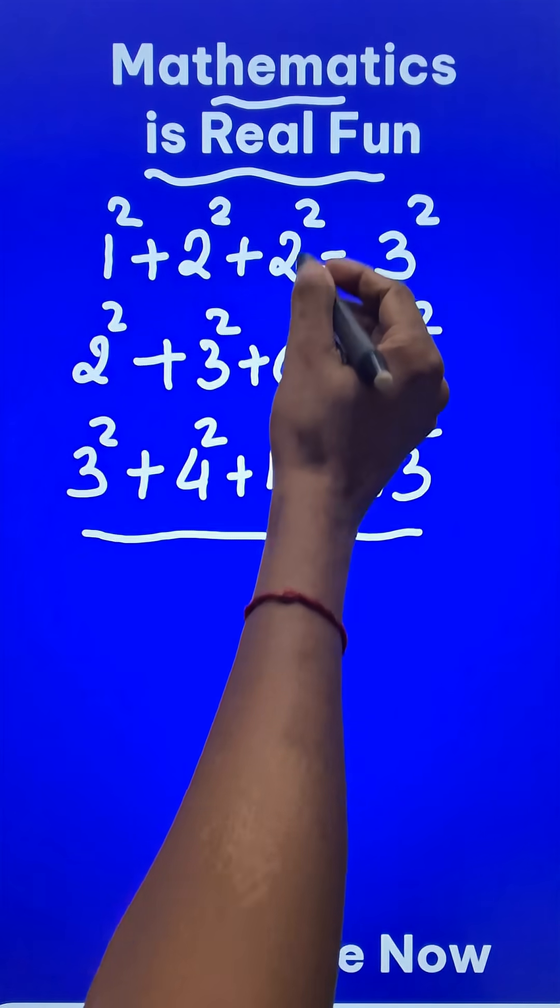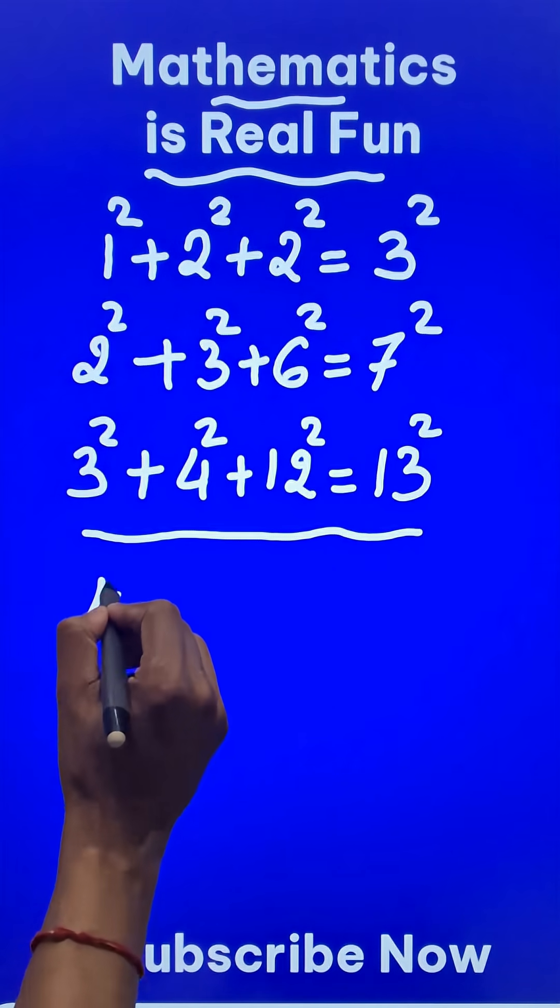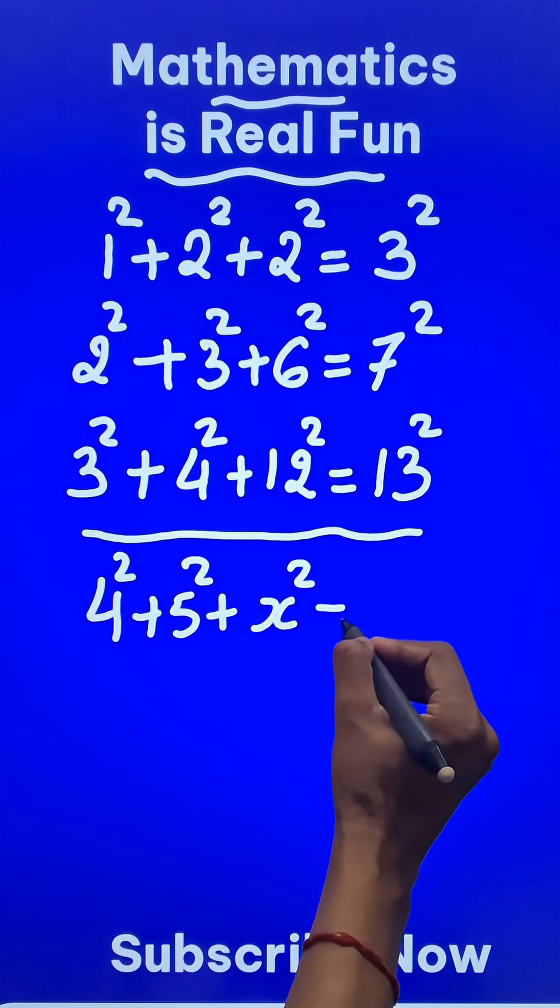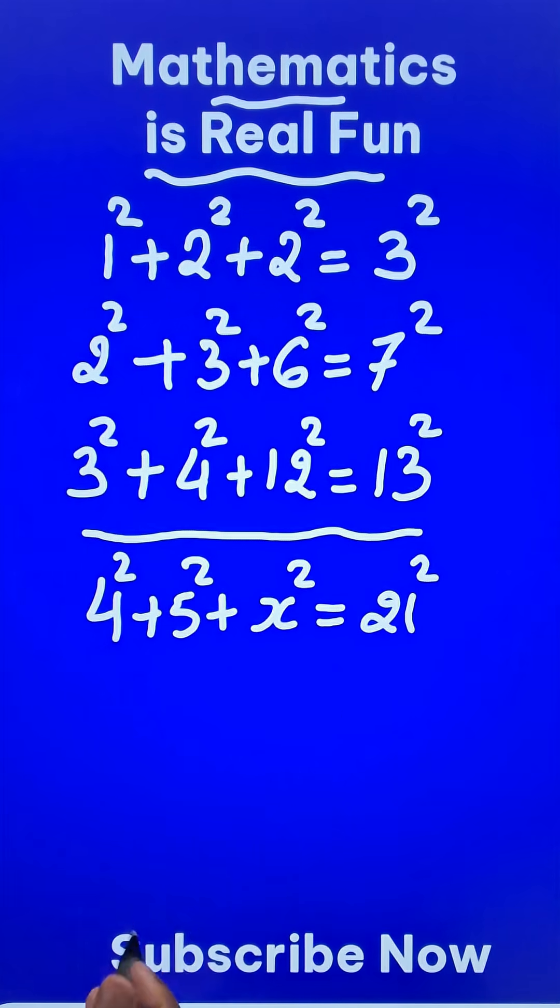If you could find a pattern, then you need to tell me 4 square plus 5 square plus x square gives us 21 square. So what will come in place of x?